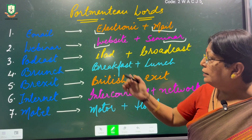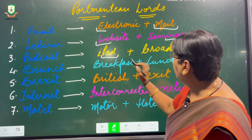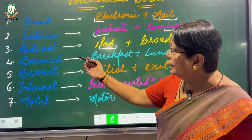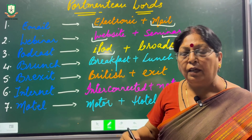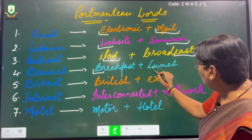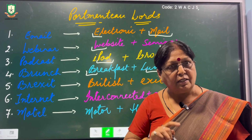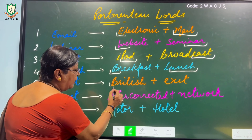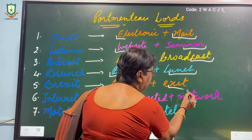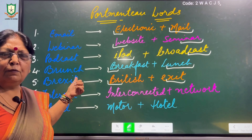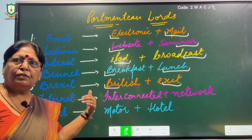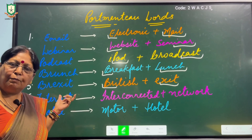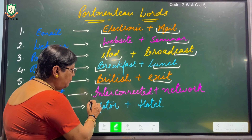Next, podcast — we have taken 'pod' from iPod and 'cast' from broadcast, making the new word 'podcast.' Look at brunch: it is a combination of breakfast and lunch, taking 'br' from breakfast and 'unch' from lunch, which makes the new word 'brunch.' Then there is brexit — we have taken 'Bri' from British and 'exit' from exit. Brexit refers to the process when the British exited the European Union, and that is where this word comes from.